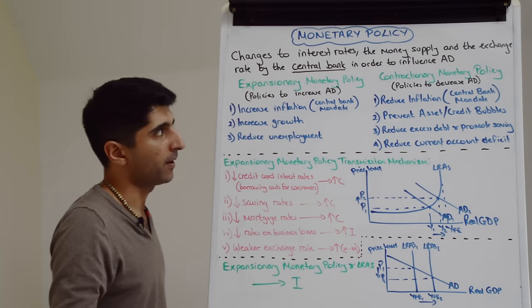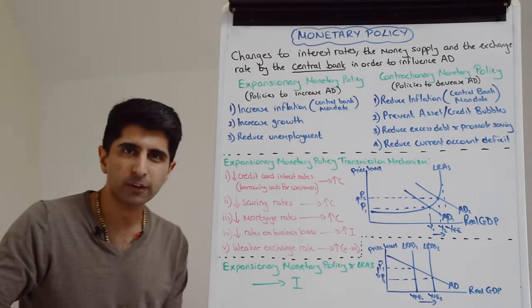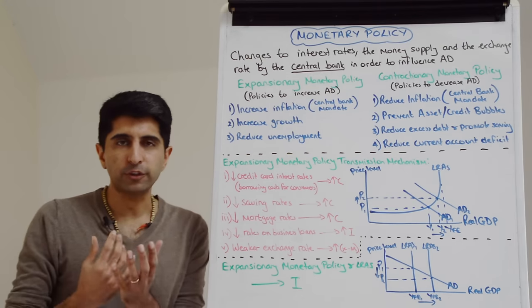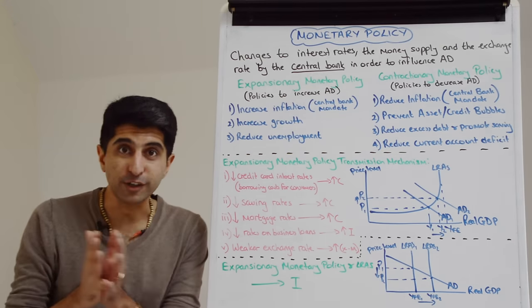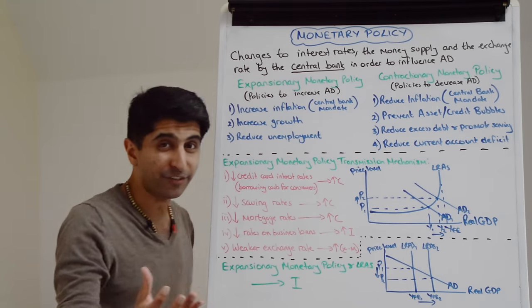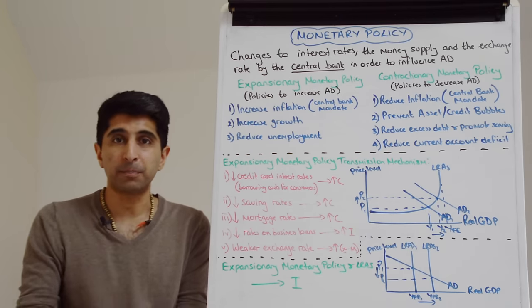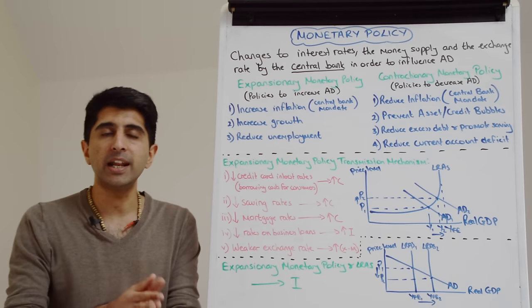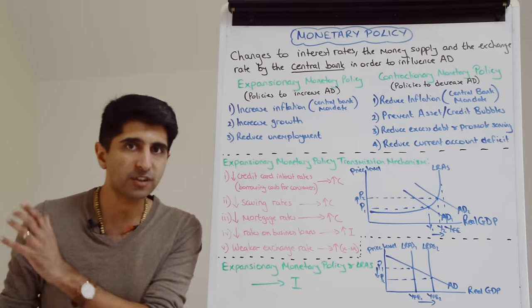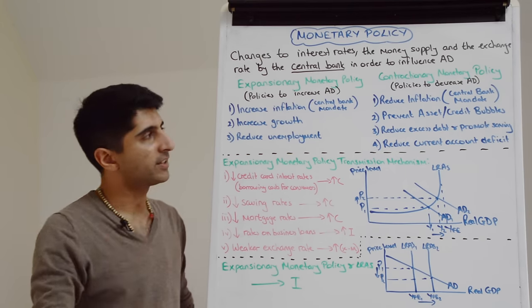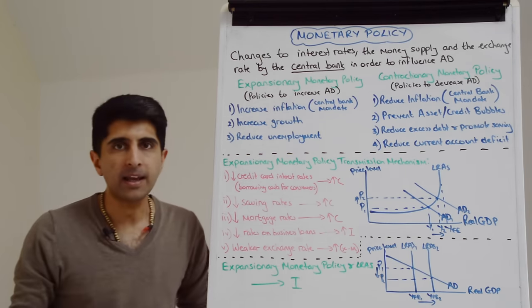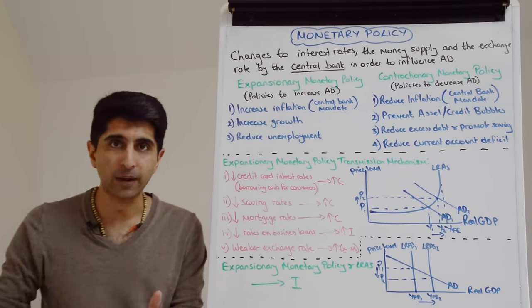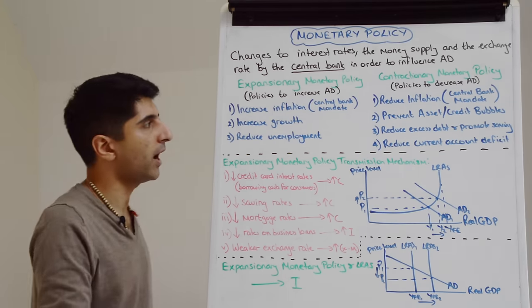What about contractionary monetary policy? Why would central banks look to use that? The primary reason is again to hit the inflation target. If inflation is beyond target and needs to come back down, a reduction in AD can reduce demand-pull inflation and bring it towards the target rate. But macroeconomic stability will be another major goal of central banks around the world, not just inflation targeting.